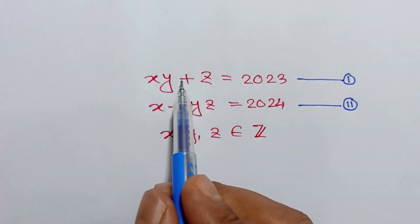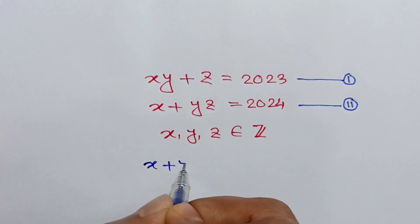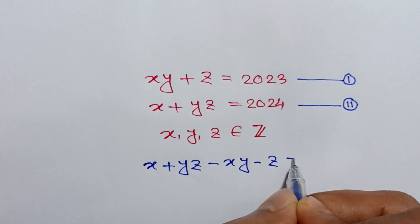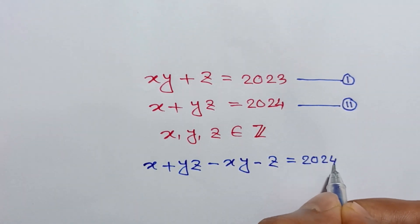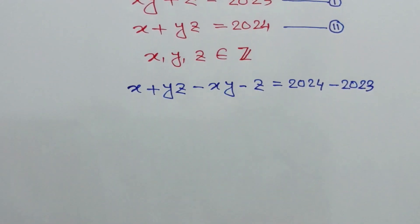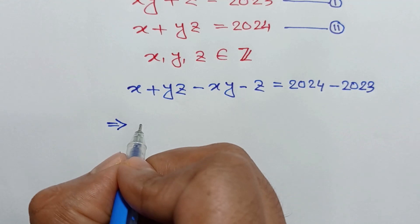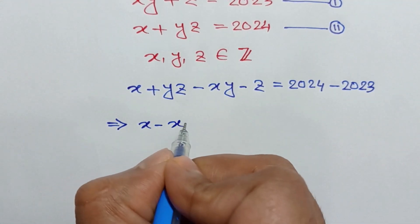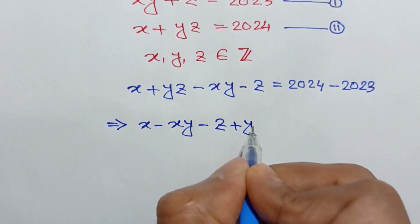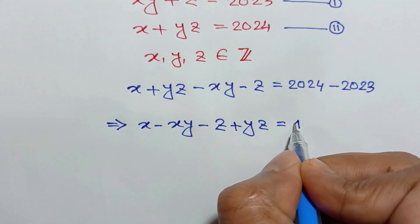If we subtract equation 1 from equation 2, we can write x plus yz minus xy minus z is equal to 2024 minus 2023. Rearranging the left side, we can write x minus xy minus z plus yz is equal to 1.